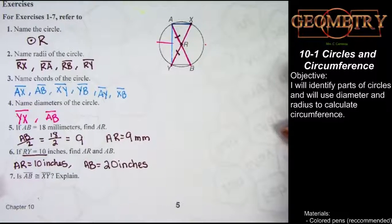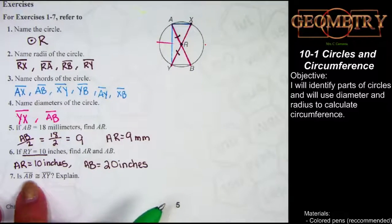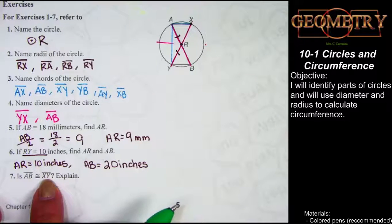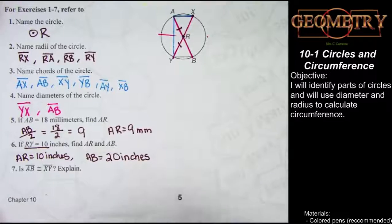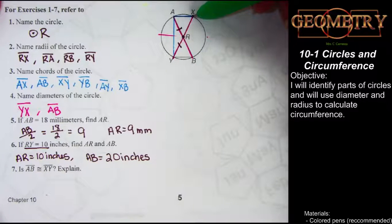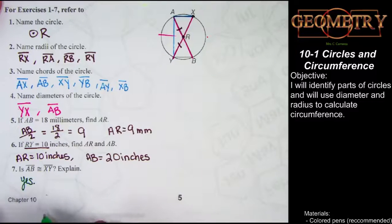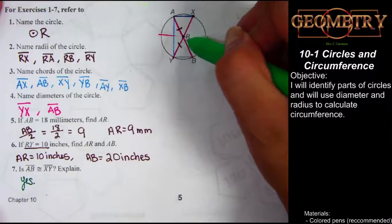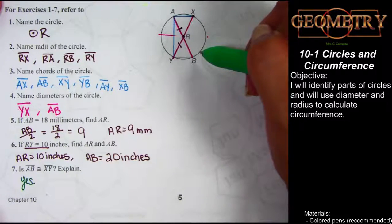Number 7 is asking: is it true that AB has the same measurement as XY? — is line segment AB congruent to line segment XY? Take a moment to think about that, write down your answer and your best explanation, then pause the video. Welcome back. Looking at number 7, AB is a diameter and XY is also a diameter. The answer is yes — they do have the same measure. That's because each diameter is the length of two radii, and since all radii within a circle are congruent, all of the diameters are also congruent to each other.